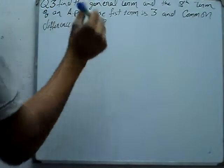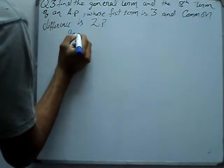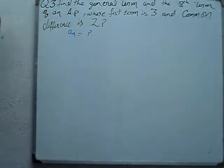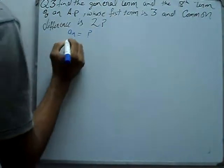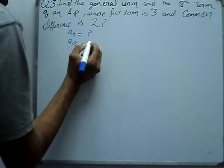We need to find the general term. The general term is AN. AN equals - we have to find out. The 18th term, A18 equals - we have to find out. These two things we need to find.